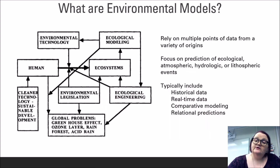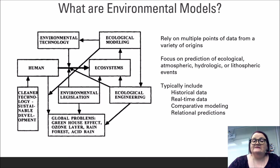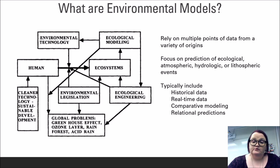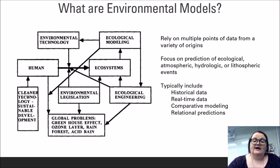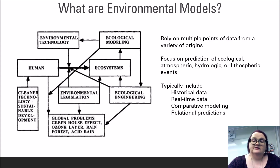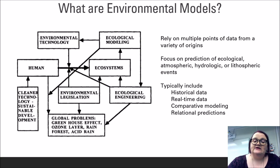Environmental models are often theoretical or predictive because these systems are complex and ever-changing. It is difficult to take a snapshot of a system and make completely accurate conclusions about what may happen in the future. Therefore, relying on multiple points of data from a wide variety of sources, locations, and disciplines can provide a solid foundation for understanding the system. Typically, these models seek to explain or predict the future behavior of four major components of the environment: ecological, biological, atmospheric, hydrologic, or lithospheric components. Environmental science seeks to understand how these components interact with one another and how those interactions can help us understand future interactions.